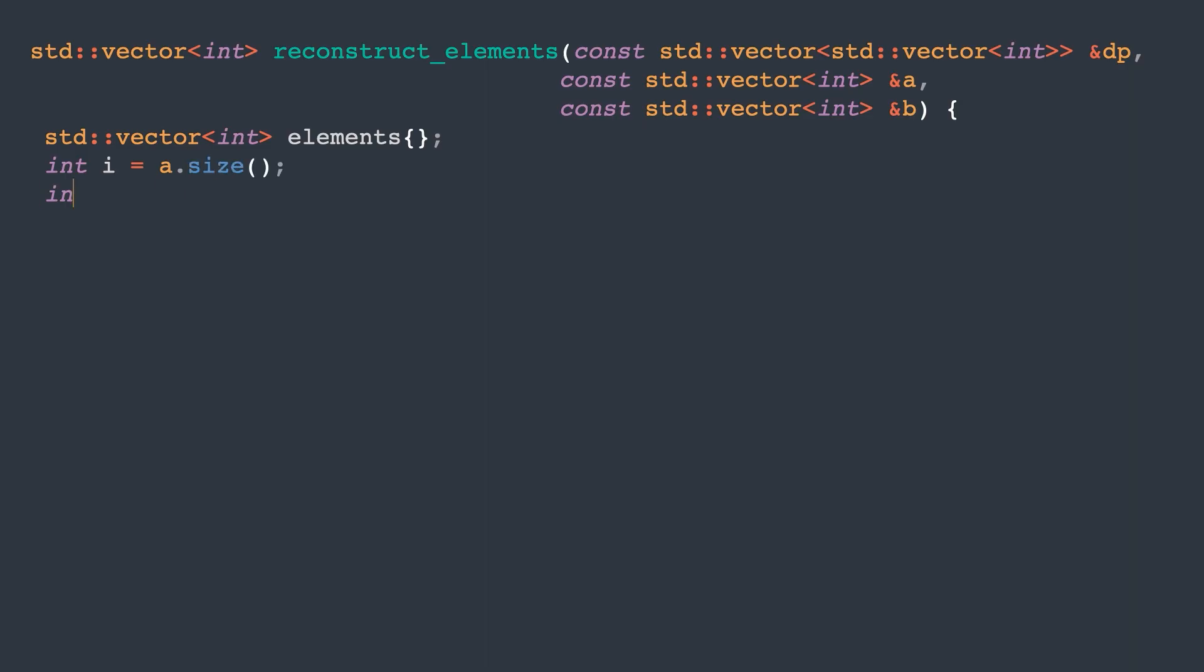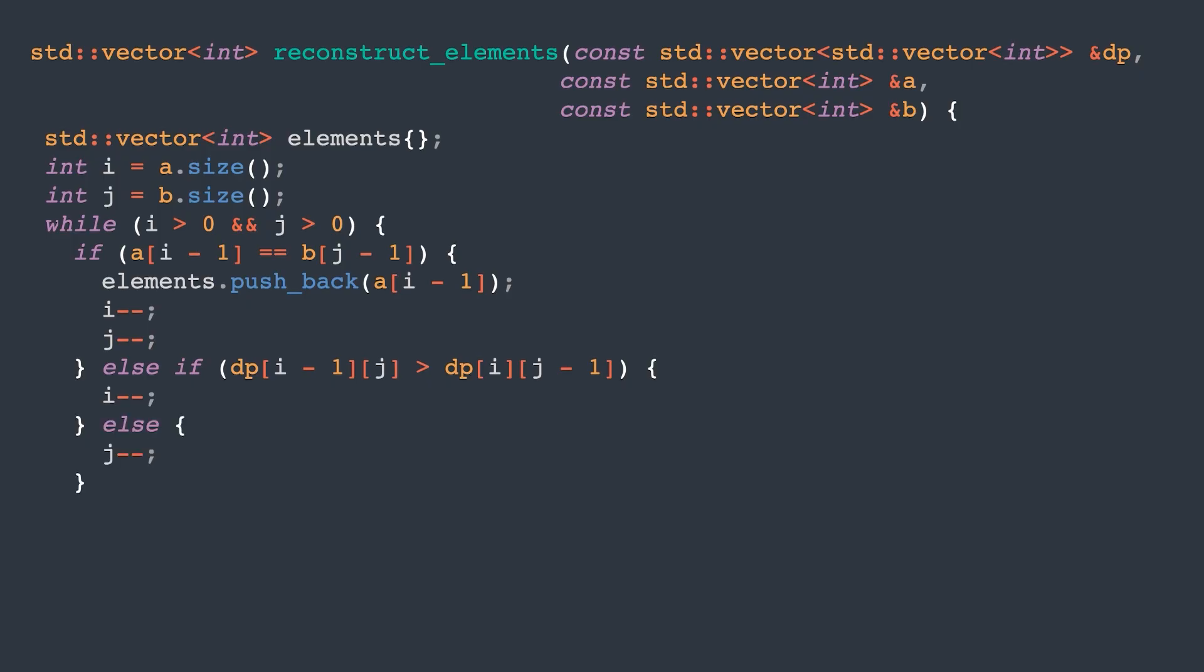Now let's implement all of this. We have already computed the DP matrix and we know the values of arrays A and B, so these will be the parameters for the reconstruct elements function. We start from the final subproblem and keep the element if it's the same in both arrays, then go back to the next subproblem. If dropping an element from array A leads to a better solution, we go to the next subproblem by decrementing i, and otherwise we decrement j.